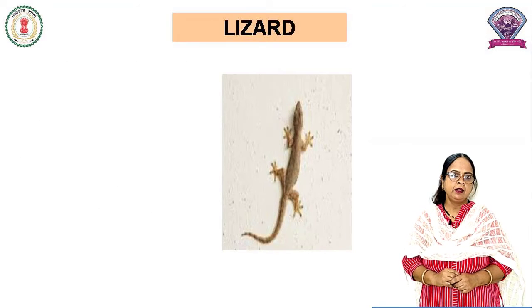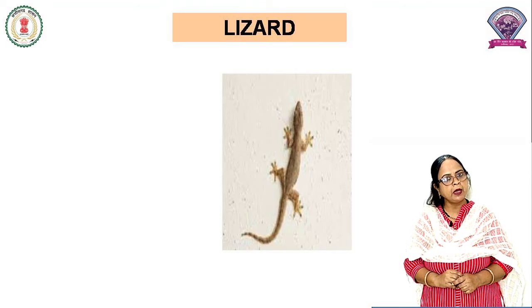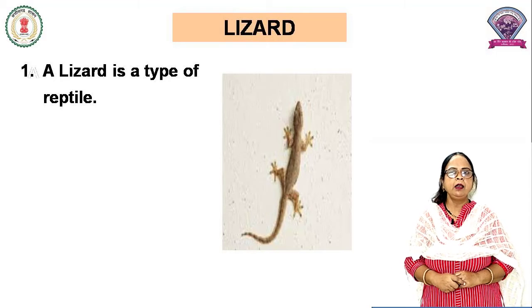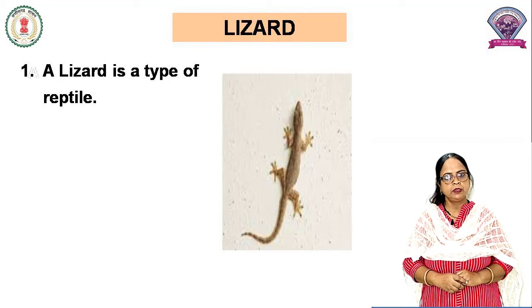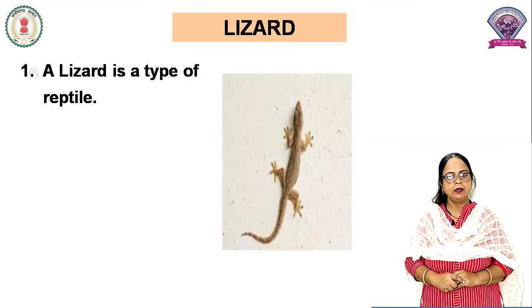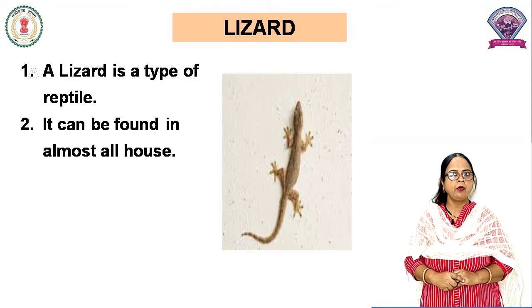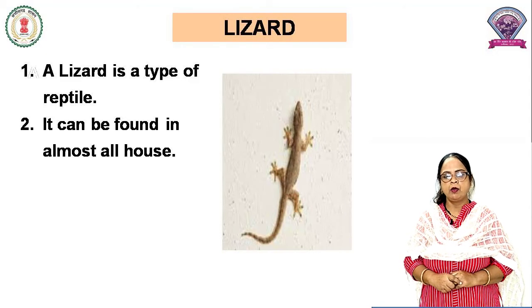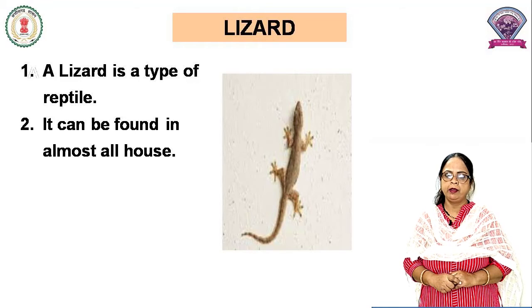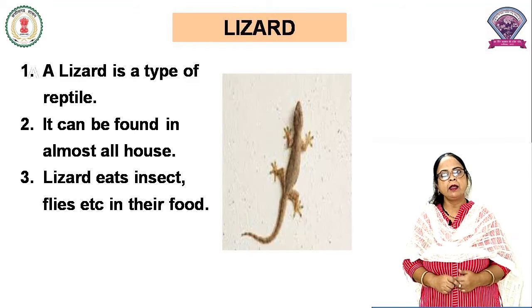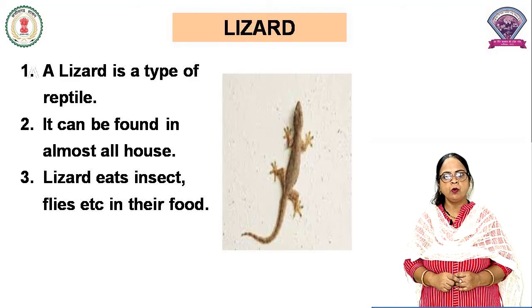Next is Lizard. Lizard means chipkali. Dekiye, chitr mein dikhai de raha hai na — chipkali ka chitr. A lizard is a type of reptile. Chipkali jo hai wo rengne wala jeev hai — saanp ki tarah yeh renghti hai. It can be found in almost all houses. Yeh lagbhag sabhi gharon mein payi jaati hai. Lizard eats insects, flies, et cetera. Chipkali keede, makode aur makkhiyon ko khaati hai.